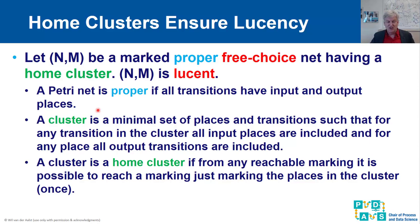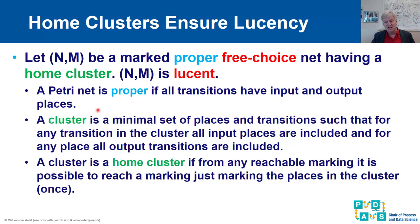The precise result: a marked proper free choice net having a home cluster is lucent. Proper just means all transitions have input and output places. A cluster is a minimal set of places and transitions such that if a place is included, all its output transitions are included, and if a transition is included, all its input places are included. A home cluster C means that from any reachable marking, it is possible to reach a marking where just the places in C are marked.